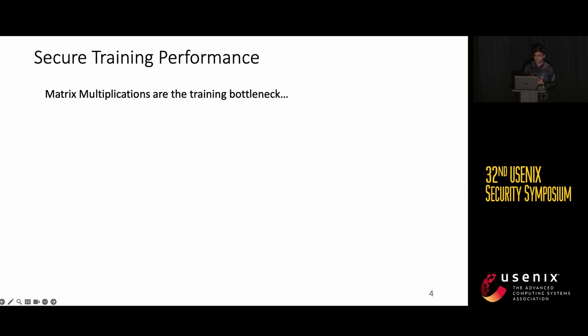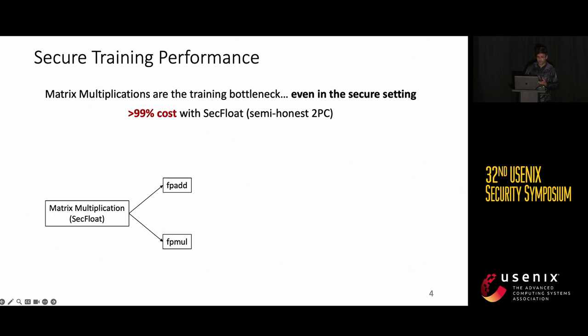Matrix multiplications, as we know, are the training bottleneck. That's why we have GPUs in the first place. And this transfers over to the secure setting as well. In particular, when we implement secure training with SecFloat, which is a semi-honest two PC library, we see that 99 percent of the cost goes towards matrix multiplications. Now, the way matrix multiplications are implemented in SecFloat as well as prior work is that they are decomposed into primitive operations like floating-point addition and multiplication. And since these operations are expensive, we also end up with an expensive matrix multiplication. In this work, we don't try to optimize these primitive operations. Instead, we focus on building specialized protocol for compound operations. The idea is that working on compound operations should allow more room for optimization.